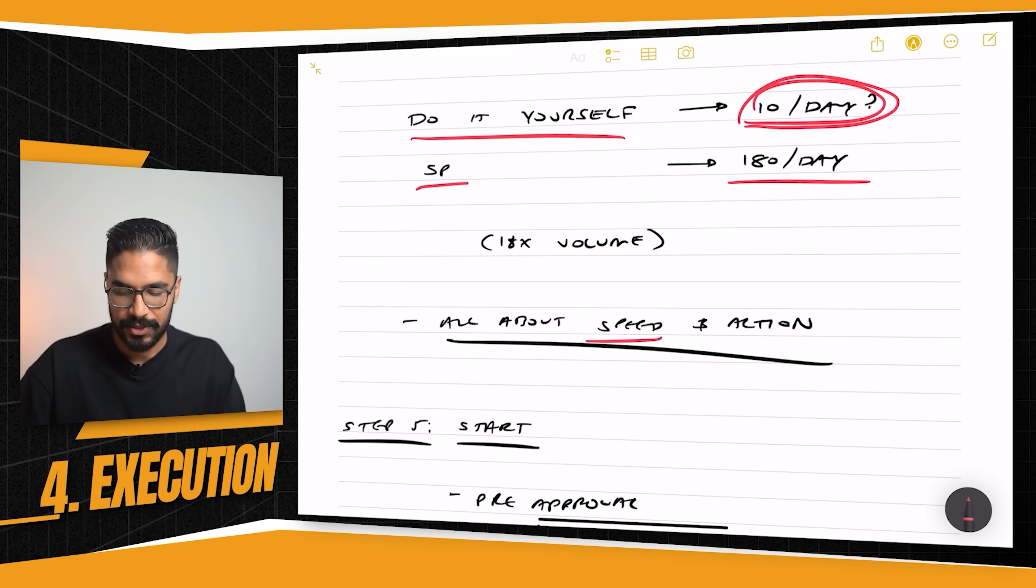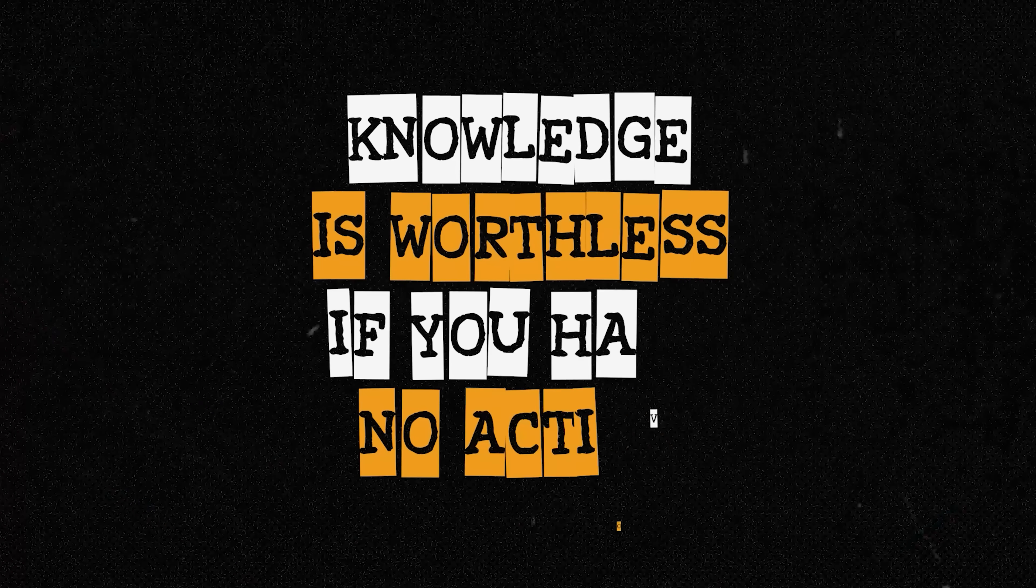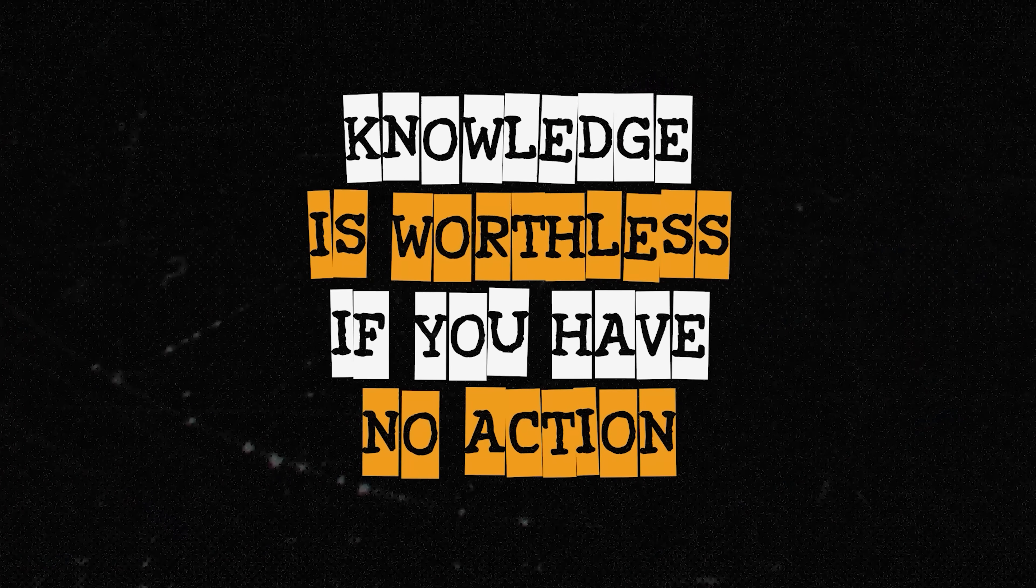So it really comes down to two things. It's speed and action. And when you look at speed and action, you're probably going to have to offset that with a cost. A cost whether you think is a cost or an investment. And in this case, if you're paying for a buyer's agent or you're paying for courses or you're paying for books, there is a cost associated with the knowledge. But knowledge is worthless if you have no action.